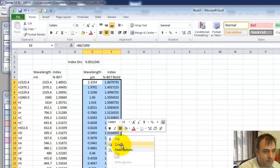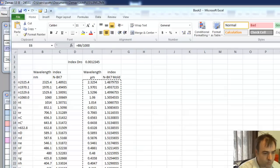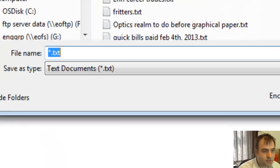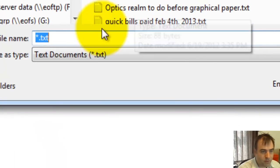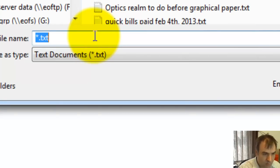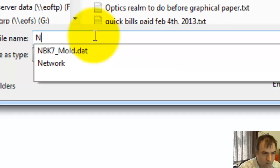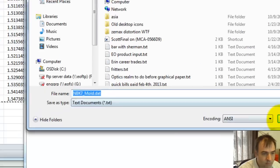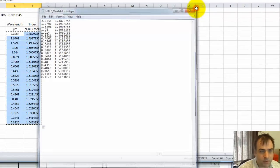I'm going to copy this. I'm going to go to a new notepad. Paste. Let's save it on the desktop. We'll do NBK7 mold, we'll overwrite it. So there's our data.